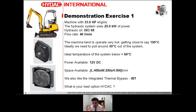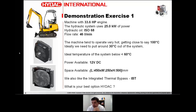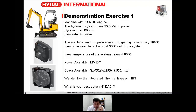This machine has an engine with 33.6 horsepower, which translates to around 25 kilowatt. The hydraulic system uses 25 kW of power with hydraulic oil ISO VG 68 and a flow rate of 46 litres per minute. The customer noted the machine tends to operate very hot, getting close to 100°C. Ideally they need to pull around 30°C out of the system, with an ideal system temperature below 60°C. Power available is 12 volts DC. The customer also wants to integrate a thermal bypass (IBT) and has given us the available space.